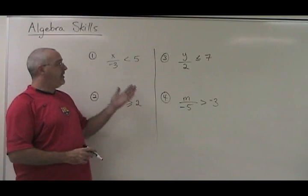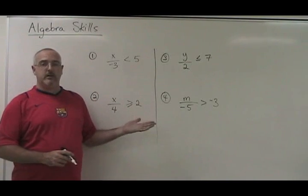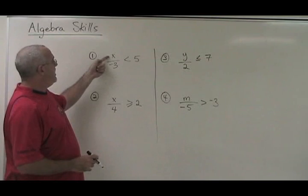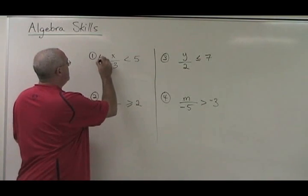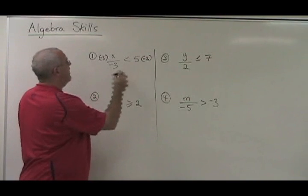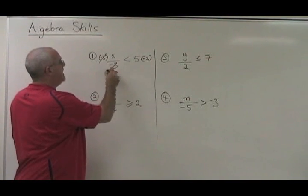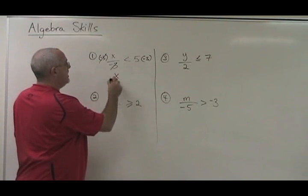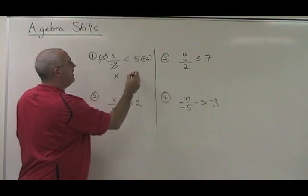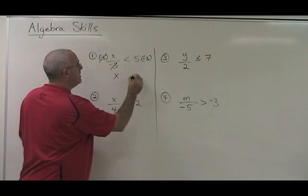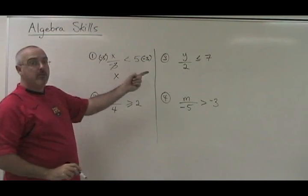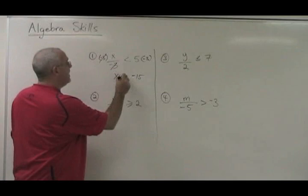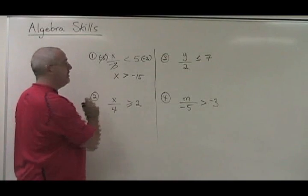And now we have a very similar set of circumstances. Here, my x is being divided by negative 3. So I have to multiply both sides by negative 3, so that these will cancel and my x is isolated. 5 times negative 3 is negative 15. But because I multiply both sides by a negative number, I have to flip the symbol backwards.